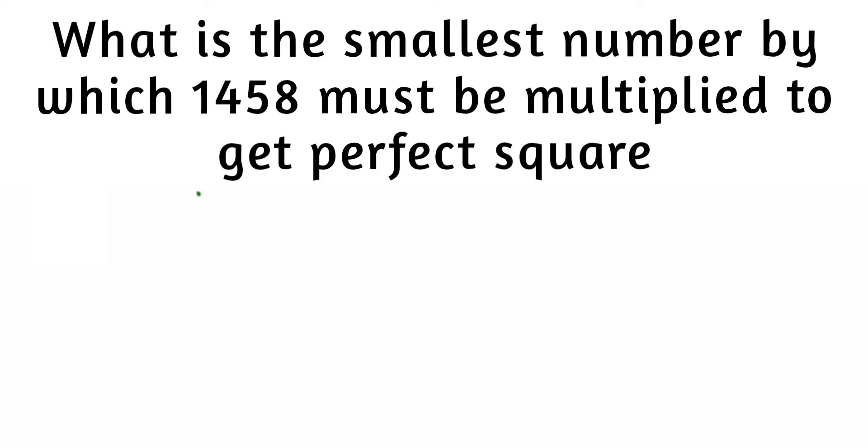Hey everyone, the question is from square and square root: What is the smallest number by which 1458 must be multiplied to get a perfect square? We'll use the prime factorization method. Remember that we cannot use a long division method for finding this problem. If they're asking you to find the smallest number to be multiplied or divided, you have to go by prime factorization.